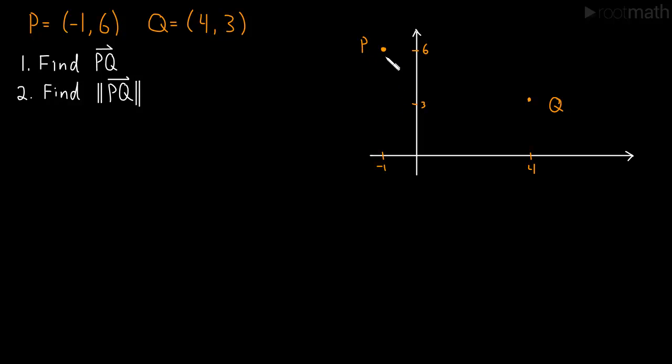And so this is Q, and this over here we said was P, so (-1, 6) and (4, 3).